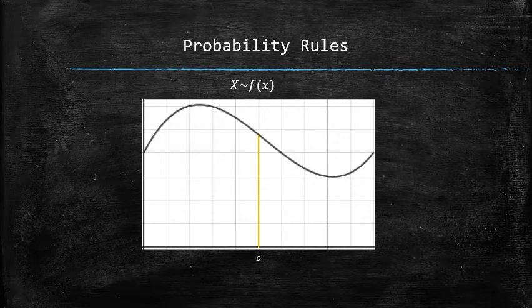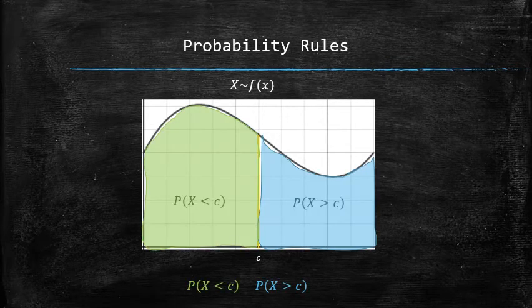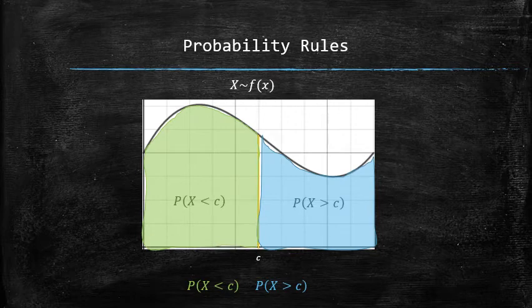Looking at the probability density curve, it is easy to observe the relation between the following probabilities. The conclusion is that the sum of the two probabilities is equal to 1.